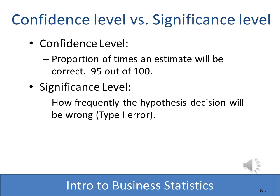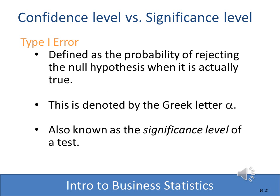Let's review an important concept. The confidence level is the proportion that the estimate will be correct — at 95%, 95 out of 100 times the sample will represent the population values. The significance level is how frequently the hypothesis decision will be wrong — that is, making a Type 1 error. A Type 1 error is the probability of rejecting the null hypothesis when it's actually true, denoted with alpha. So if our significance level is 0.01, the chance of rejecting a true null hypothesis is only one percent — one out of a hundred.